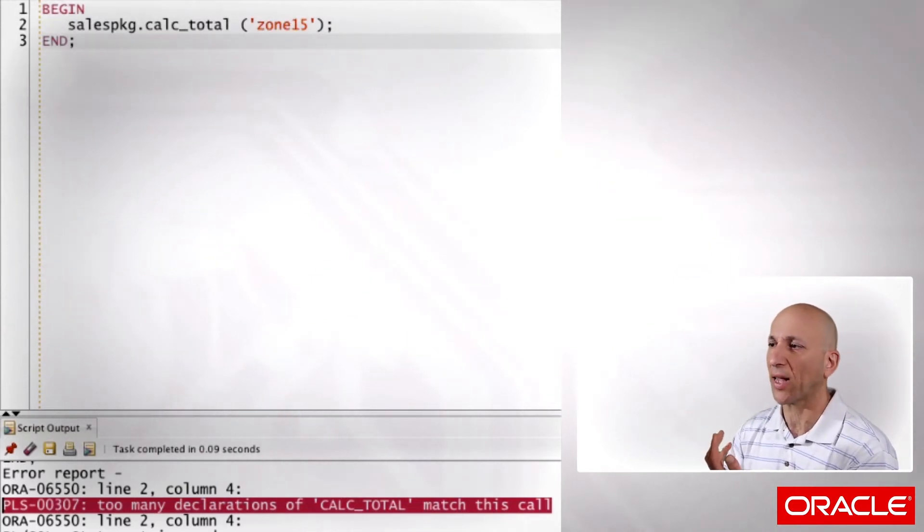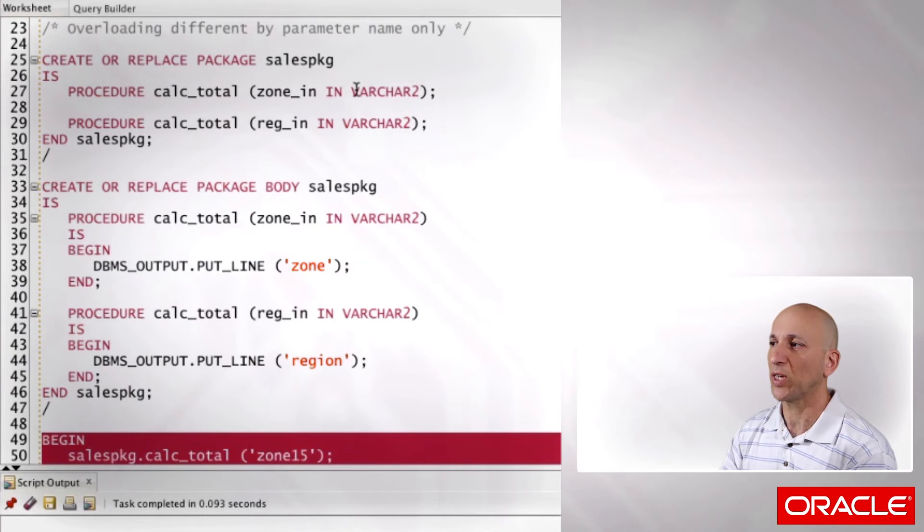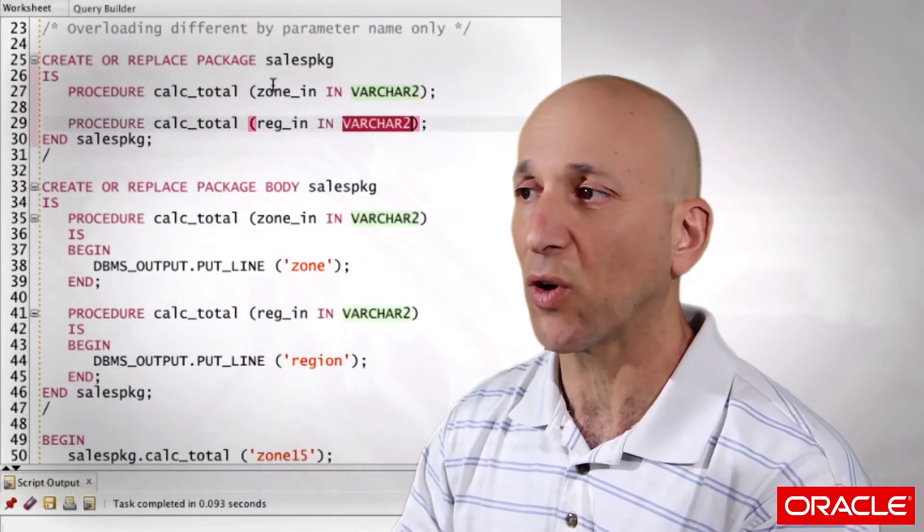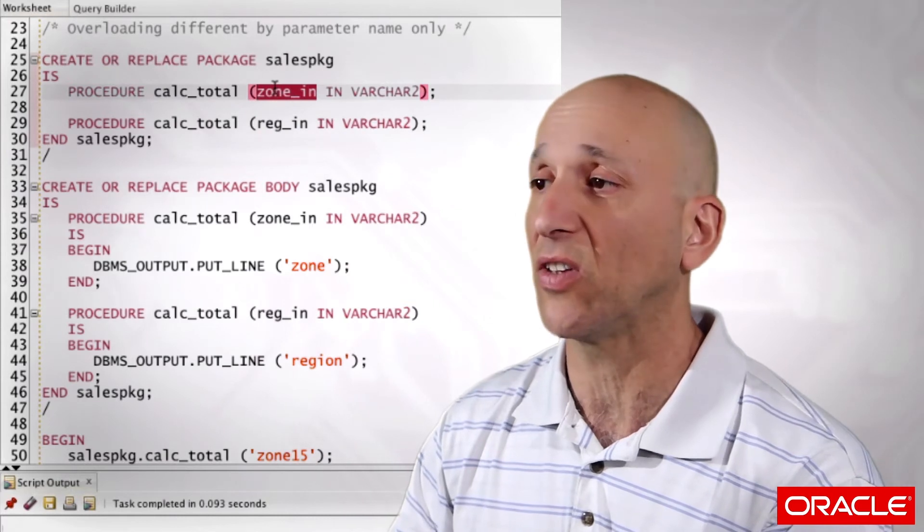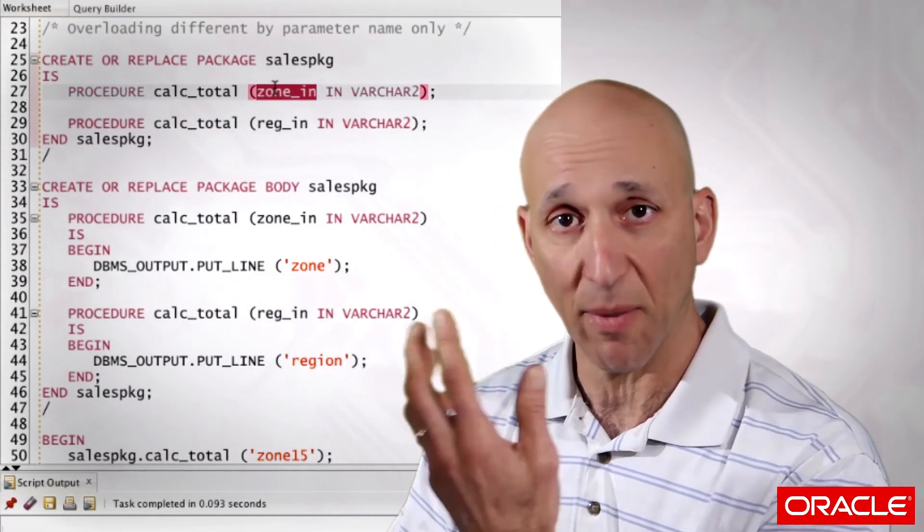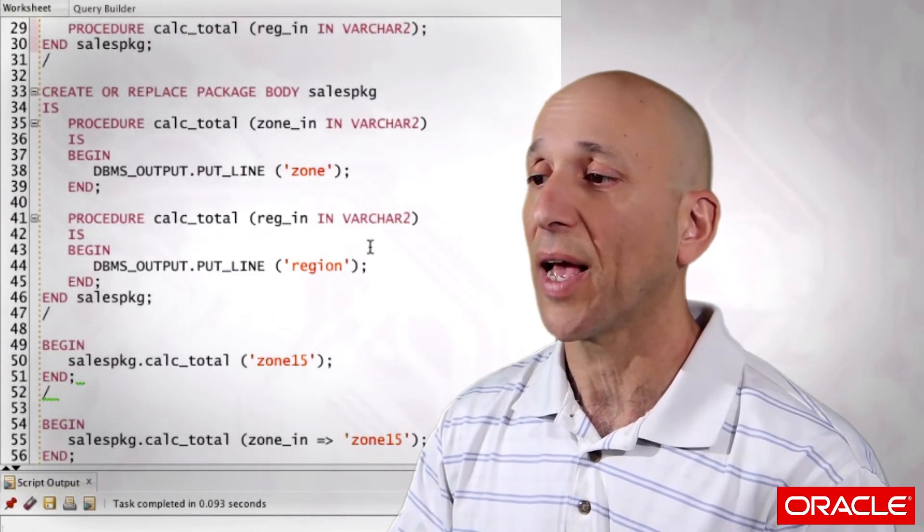But of course, from the standpoint of the compiler, it can't distinguish between two different strings in the parameter list. We know it's a zone string, but all Oracle sees is it's a string. So it fails to be able to execute or find the match and execute the right one.